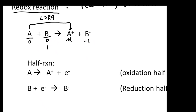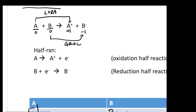A undergoes LoRa, which means your B is going to be your GROC. B gains electrons — that's why it goes from zero to negative one — and undergoes a reduction reaction. Once you can see these things, you can start to break down your chemical equation into the so-called half reaction. A becomes A-plus and loses electrons; B gains electrons and becomes B-minus. When we do balancing equations, this will be a critically important step to master.